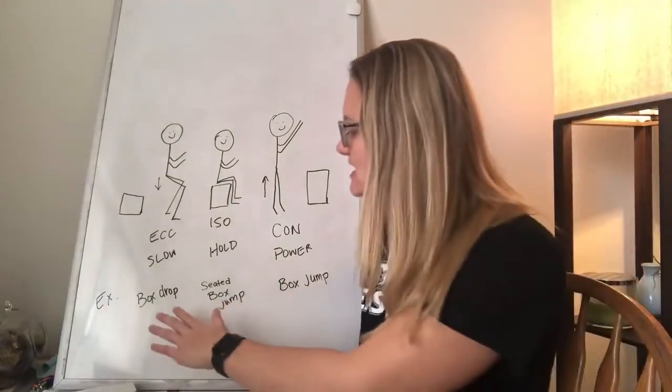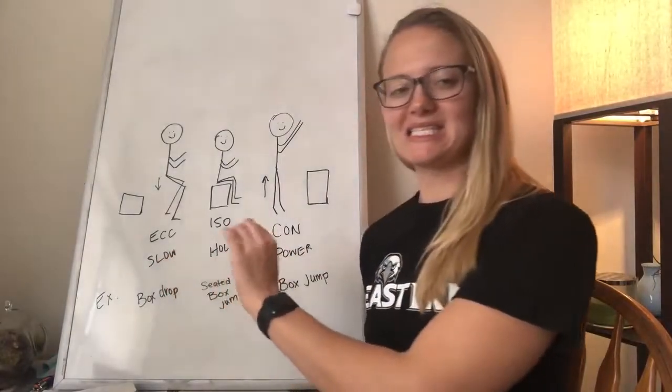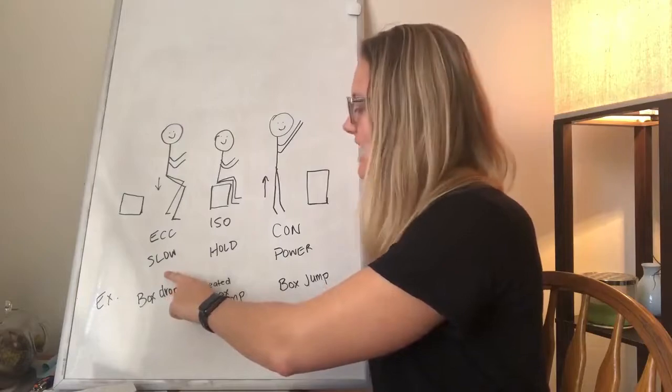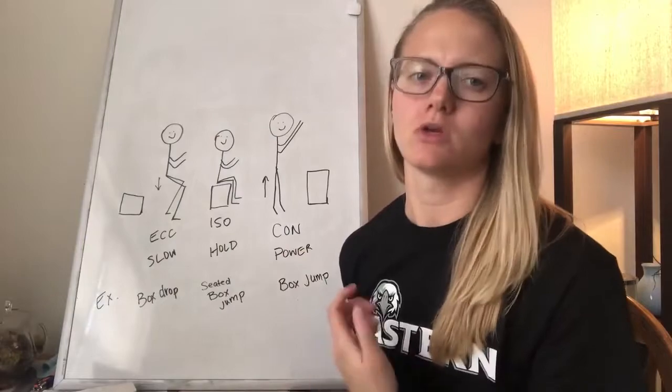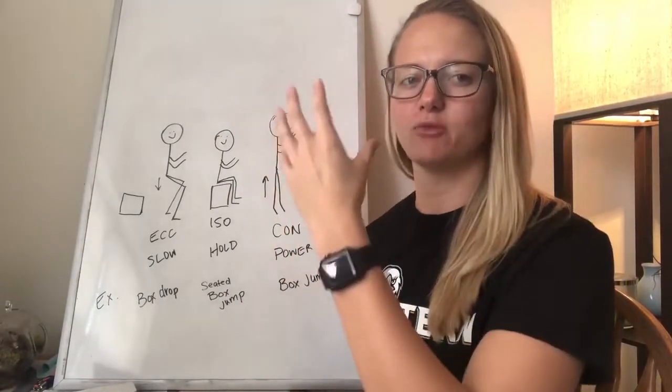So this is kind of how a plyometric goes. You essentially slowly control the motion down, then you hold it for a second, then you power back up. And when I say holding for a second, you really don't hold for a second. It's literally just an instant, and then you pop back up.